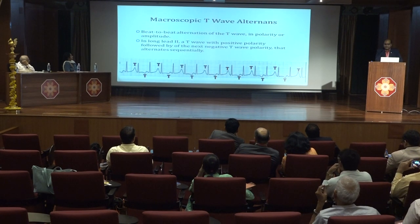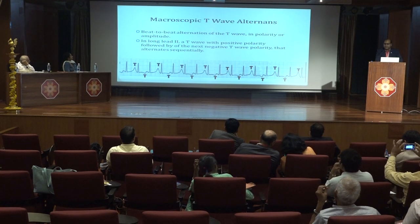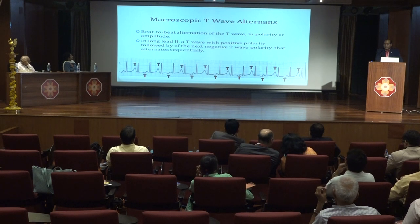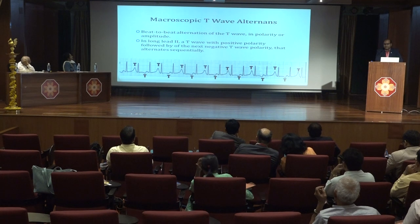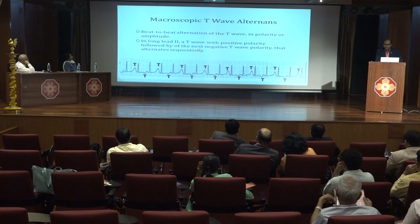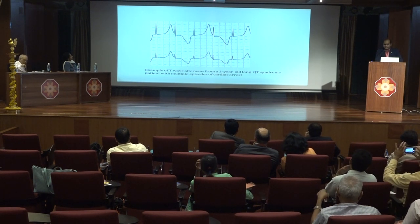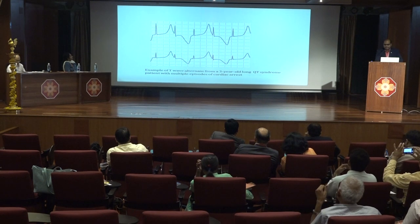Macroscopic T wave alternans is a characteristic sign of long QT syndrome, characterized by beat-to-beat variation in T wave polarity and amplitude. It may occur briefly at rest but is usually associated with emotional stress or physical exertion and may precede torsades de pointes. In this long lead II, we see alternating positive and negative T waves. Another example from a 3-year-old child with multiple episodes of cardiac arrest also shows alternating positive and negative T waves.